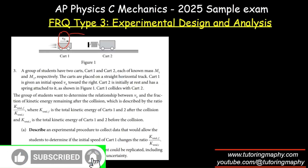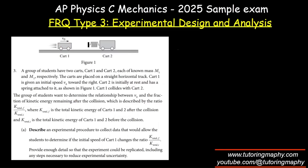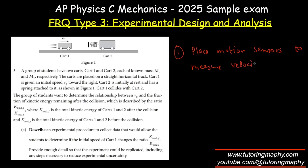To determine if V0 changes this ratio, we obviously want to get these values at different values of V0. First, place motion sensors to measure the velocities of both blocks before and after the collision.